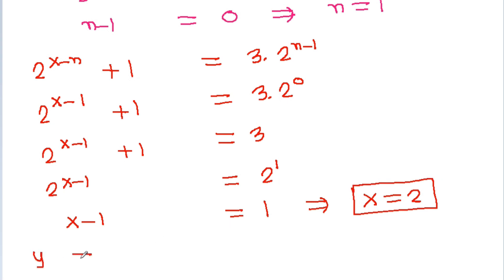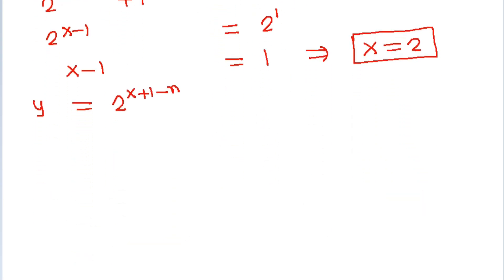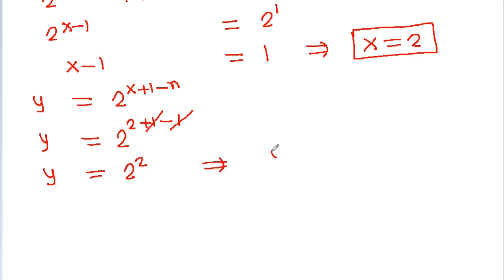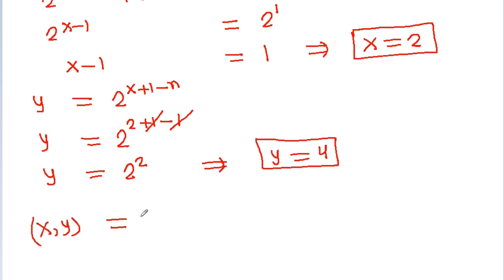With x = 2 and n = 1, y = 2^(x+1-n) = 2^(2+1-1) = 2^2 = 4. So the solution for Case 2 is (x, y) = (2, 4).